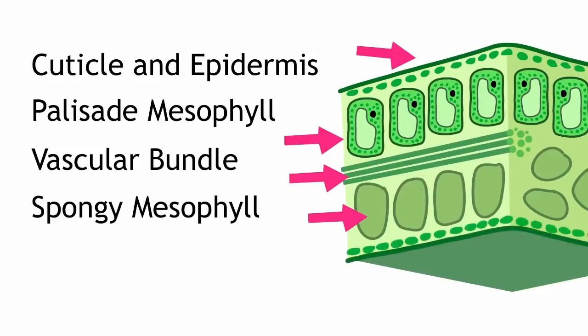And below that, we've got another layer of epidermis and cuticle. Spaced around the lower epidermis and the cuticle are the stomata, with guard cells on either side.